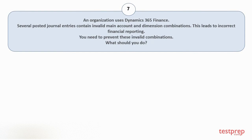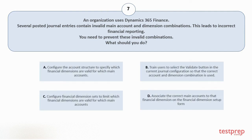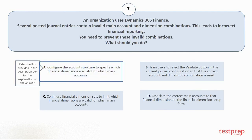Question number 7: an organization uses Dynamics 365 Finance. Several posted journal entries contain invalid main account and dimension combinations, leading to incorrect financial reporting. You need to prevent these invalid combinations. What should you do? Your options are: A. Configure the account structure to specify which financial dimensions are valid for which main accounts. B. Train users to select the validate button in the current journal configuration so that the correct account and dimension combination is used. C. Configure financial dimension sets to limit which financial dimensions are valid for which main accounts. D. Associate the correct main accounts to that financial dimension on the financial dimension setup form. The correct answer is option A.